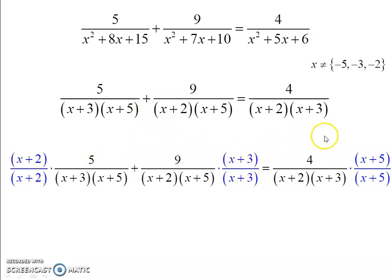9 times x plus 3, multiply it out. And 4 times x plus 5, multiply it out. If you want to pause and give that a try, go for it. I'm going to show the answer. This is what I get.